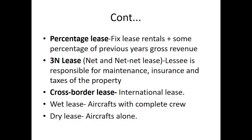Percentage lease means the lease rental agreement includes a notional hike every year — say 5% or 10% annually. For example, if you pay 5,000 rupees rent today, next year it becomes 5,500 rupees. Triple Net (NNN) lease: normally maintenance, insurance, and taxes are paid by the lessor, but in NNN lease, the lessee bears all of these. Cross-border lease means a lease agreement with parties established in different countries, requiring an international lease arrangement. We also have wet lease and dry lease, already discussed.